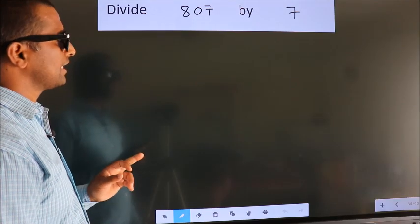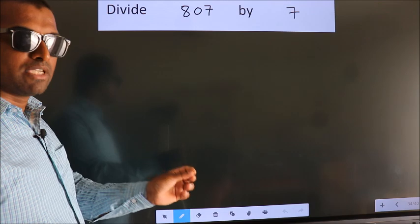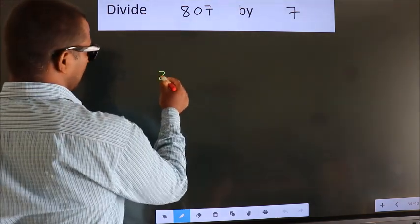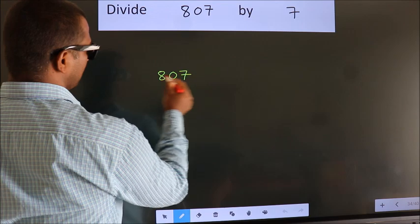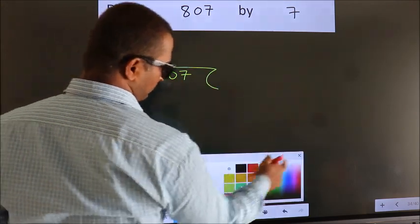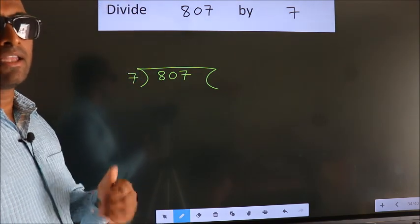Divide 807 by 7. To do this division, we should frame it in this way. 807 here, 7 here. This is your step 1. Next.